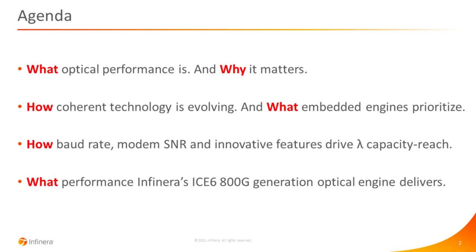Then we'll look at how you get the maximum wavelength capacity reach, both at 800G data rates and at lower data rates. That really boils down to three things: the baud rate, the modem SNR, which I'll explain, and some innovative features. We'll wrap up by looking at what performance you can expect from Infinera's i6 800G generation optical engine, what it can deliver, and what factors influence the actual performance you'll see in a real network.